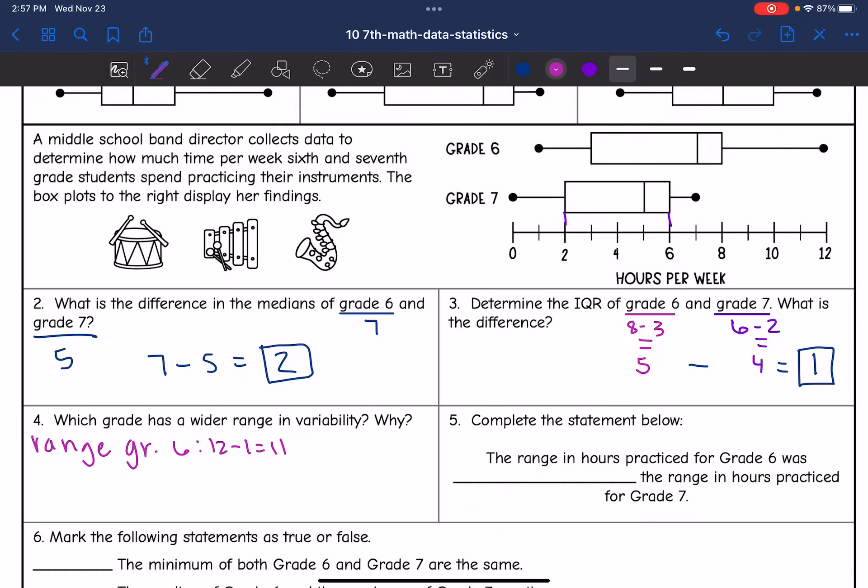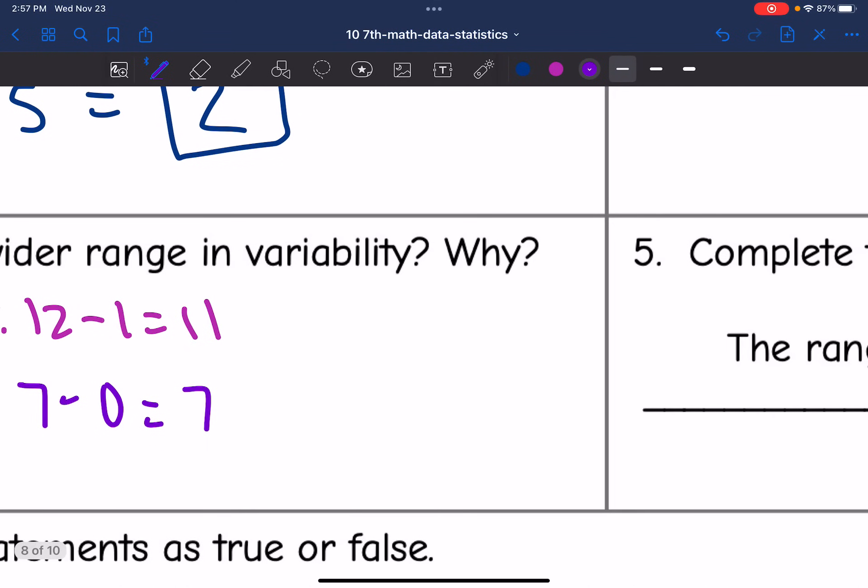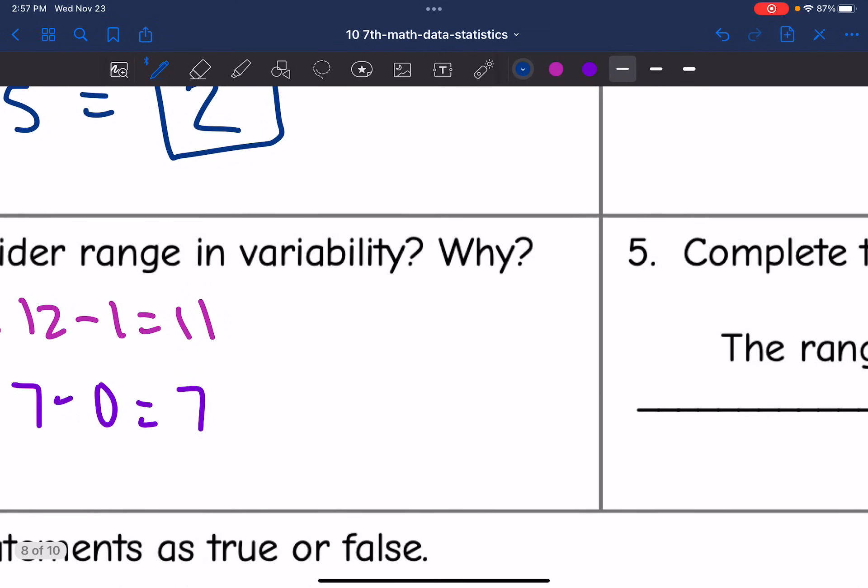So the range of grade six is 11. And then we can find the range of grade seven to compare. It would be seven minus zero, which is seven. So which grade has a wider range in variability? That would be grade six.